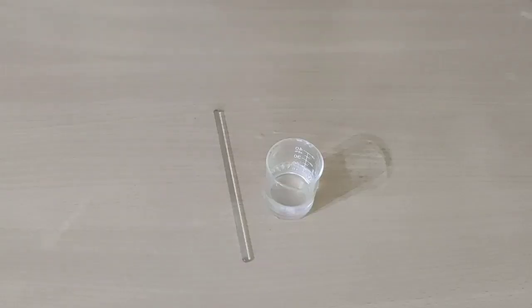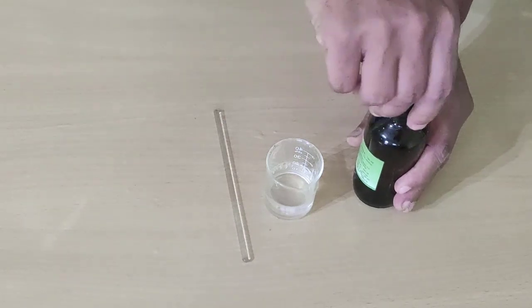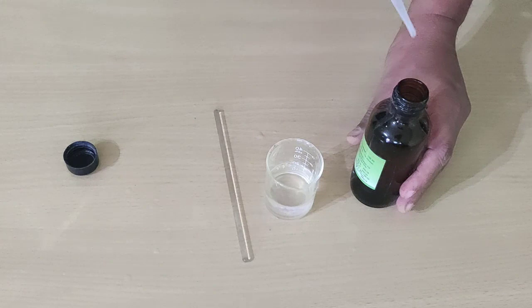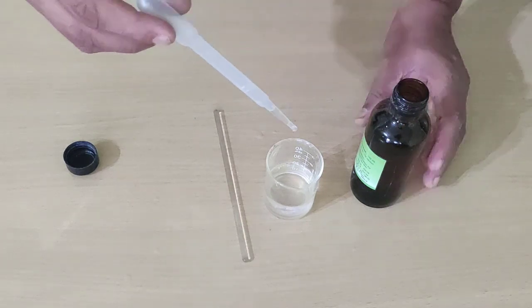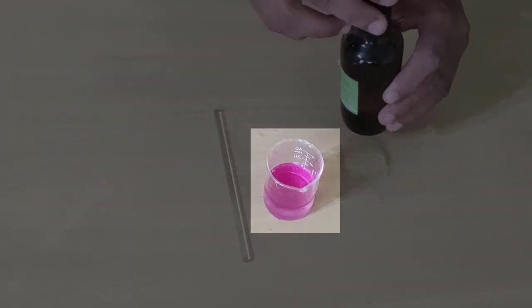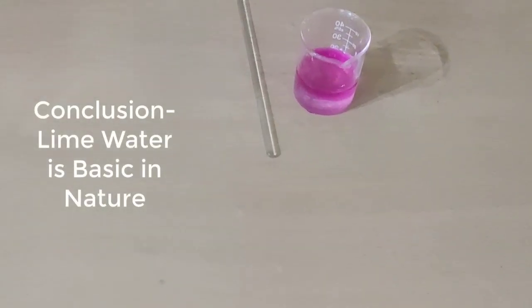Now in this lime water, we will add a few drops of phenolphthalein, which is an indicator, with a dropper. See, it has turned its color and phenolphthalein has turned pink in lime water. Lime water is basic in nature.